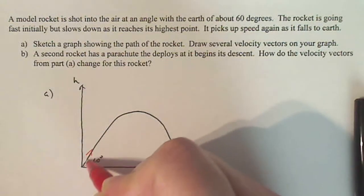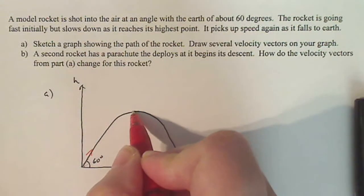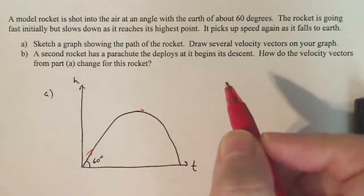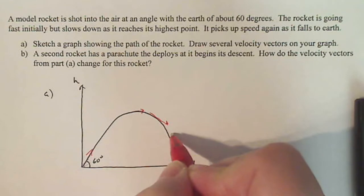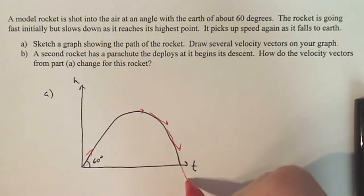So in other words, they should be longer here and shorter here. So this one should be very short because it's turning around right there. And then as I come down, they should get a little longer and a little longer and a little longer.